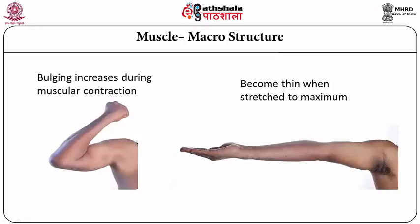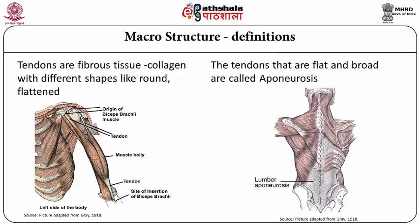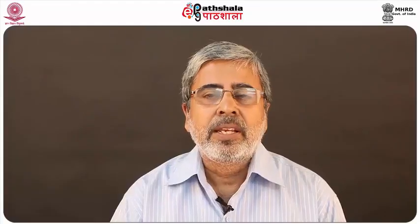Tendons are actually fibrous tissue — they are collagen — and they have different shapes. It can be a round, rope-like structure, or it can be flat. When tendons are flat and broad, those cases are called aponeurosis. In the lumbar region of the body on the back side there is a large aponeurosis called the lumbar aponeurosis, and from this aponeurosis muscles like latissimus dorsi and erector spinae originate.